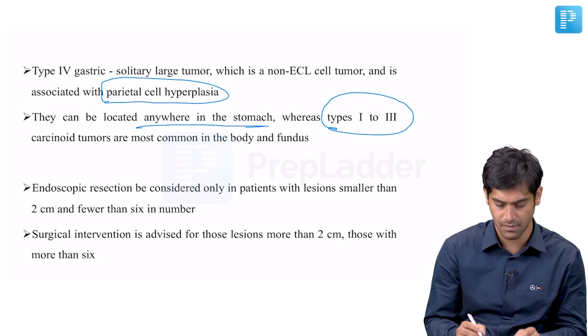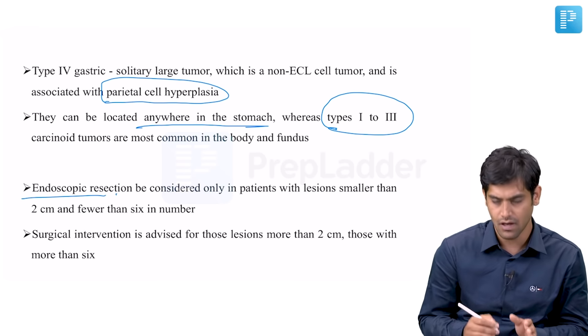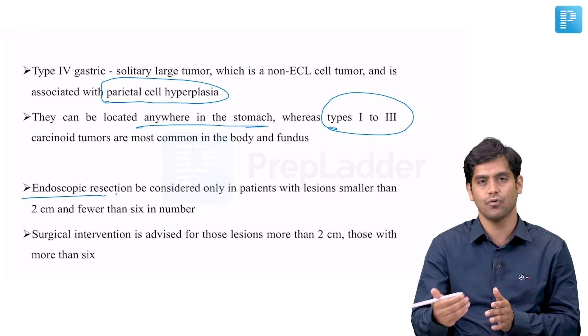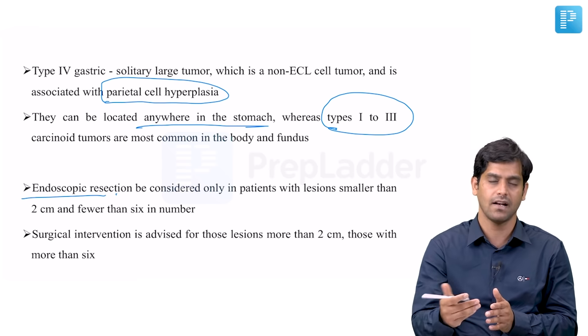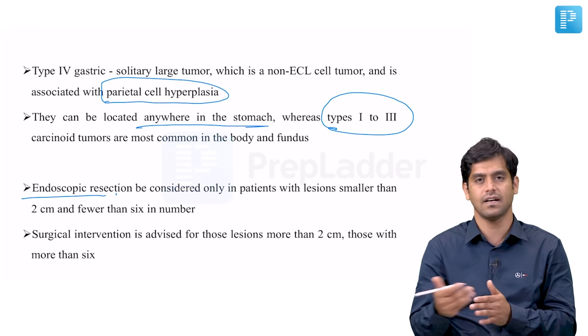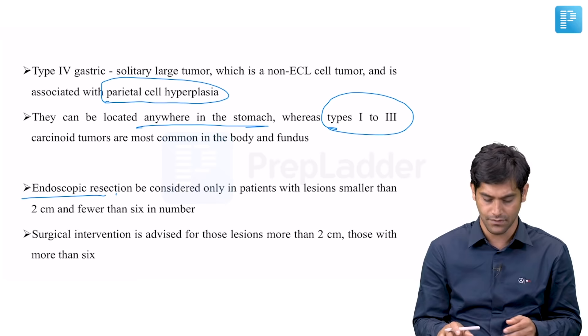Type 4 can happen anywhere in the stomach. For lesions less than 2 centimeters, endoscopic resection is performed. For lesions more than 2 centimeters, the chance of malignancy is pretty high, so they are treated the same as gastric adenocarcinoma.